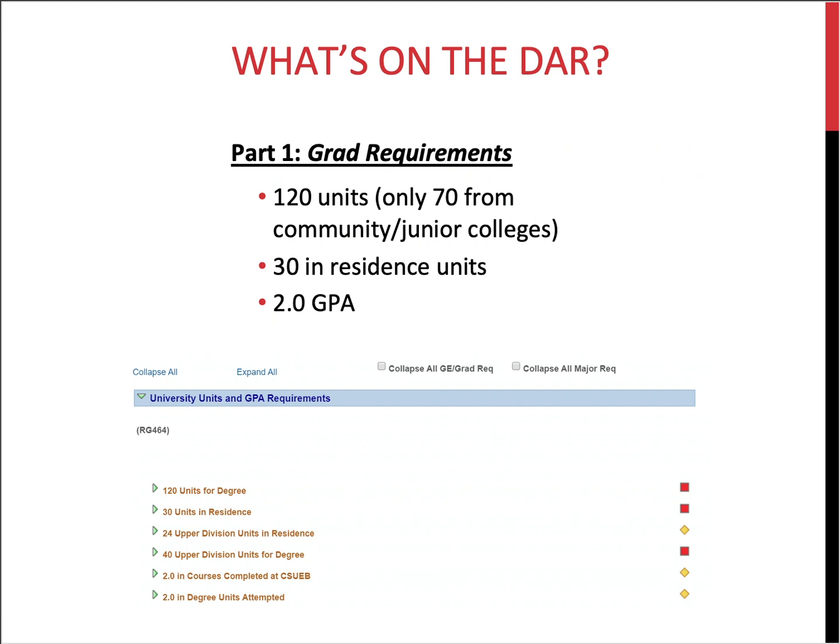Let's talk about graduation requirements. To graduate, you'll need to complete at least 120 semester units. However, for transfer students, only 70 of those units can come from your community or junior colleges. All transferable courses will be used to complete your GE, graduation, or major requirements and toward your GPA, but any units over 70 will not be counted in the total units toward graduation.